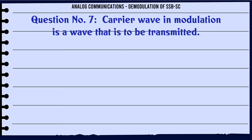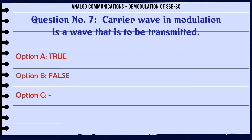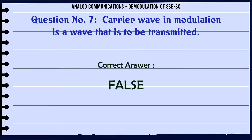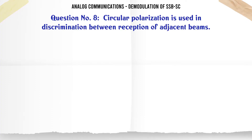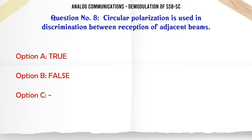Carrier wave in modulation is a wave that is to be transmitted. True or False? The correct answer is False. Circular polarization is used in discrimination between reception of adjacent beams. True or False?